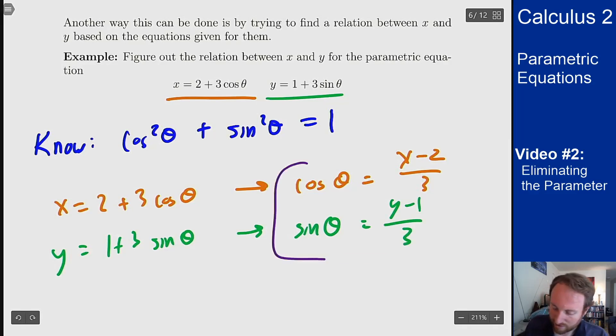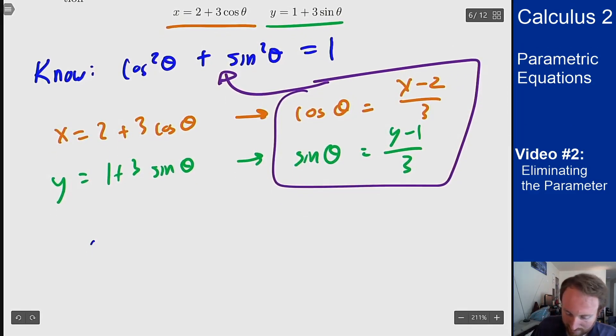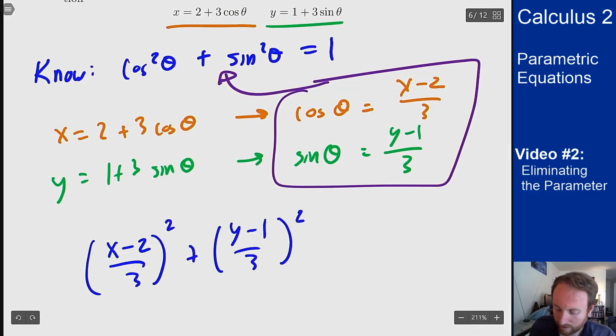I'm going to take these two facts and plug them in here, which gives me that I can write my expression as x minus 2 over 3 squared plus y minus 1 over 3 squared equals 1.